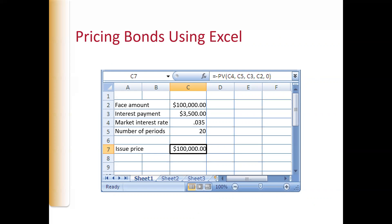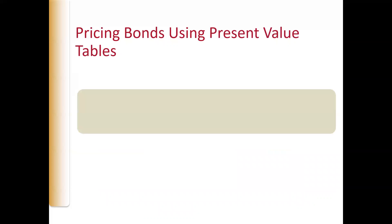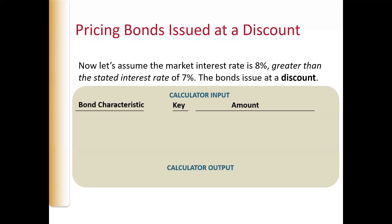Interest rates right now are quite low — you can take out a loan for 2.5%. In that case, the stated rate would be way higher, and the market rate would be so much lower that those bonds would be issued at what we call a premium. Now, if the market rate is higher than the stated rate, the bonds are going to be issued at what we call a discount — issued under $100,000. Because the going rate is greater than what they're going to be paying out every six months, an investor will only buy this bond if they can buy it for under $100,000 to make up for the interest they're not getting.